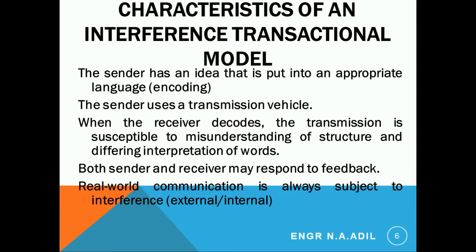The characteristics of the interference transitional model: the sender has an idea that is put into appropriate language and uses a transmission vehicle. When the receiver decodes, the transmission is susceptible to misunderstanding of structure and different interpretation of words. Both sender and receiver may respond to feedback, and real-world communication is always subject to interference — external or internal.